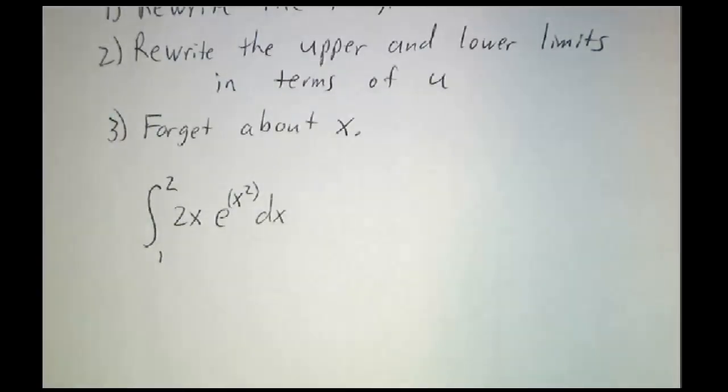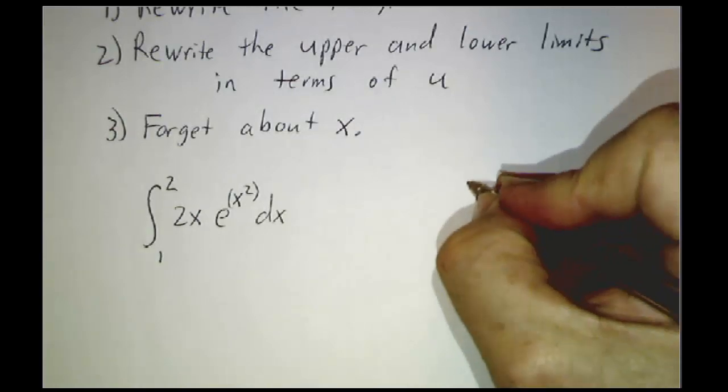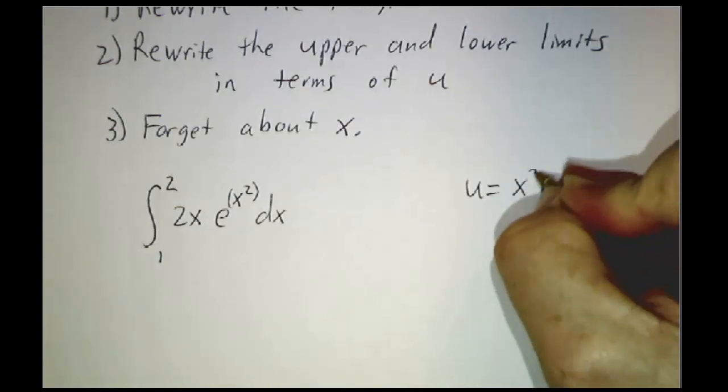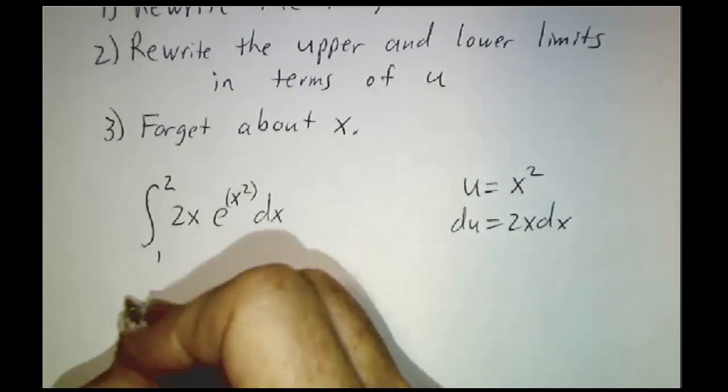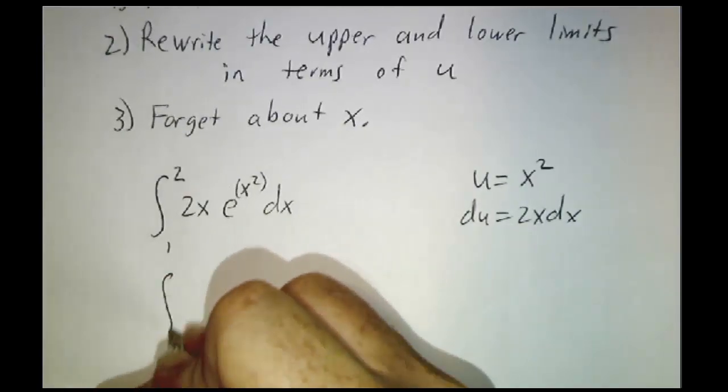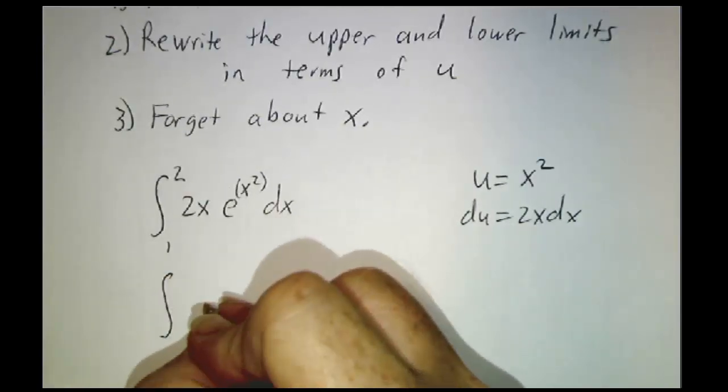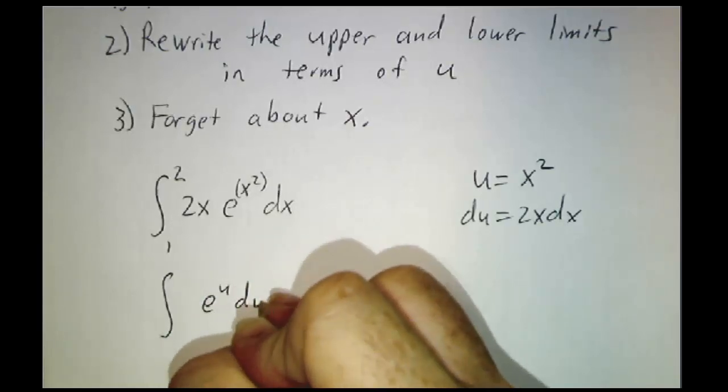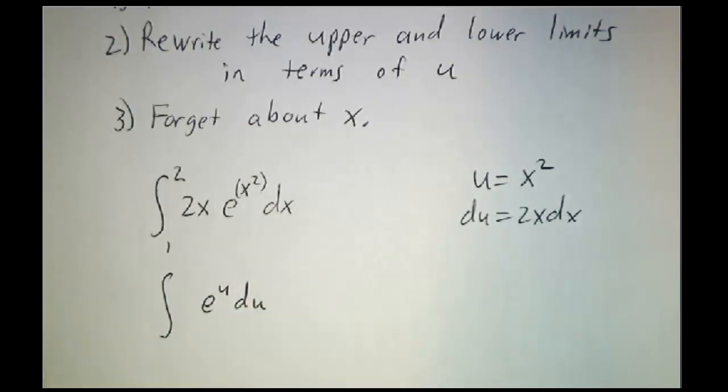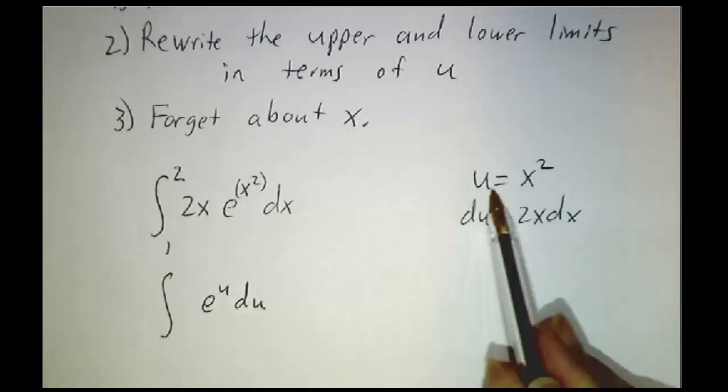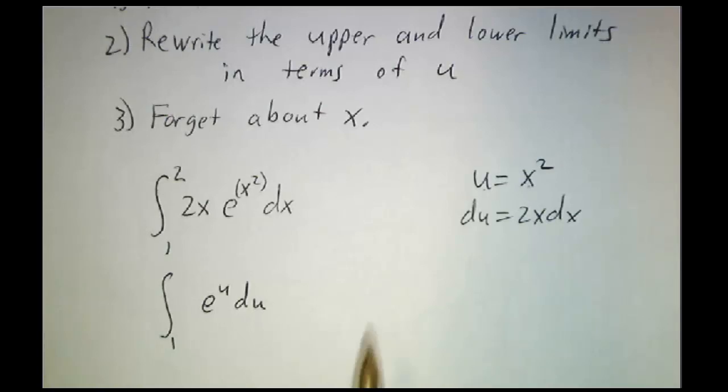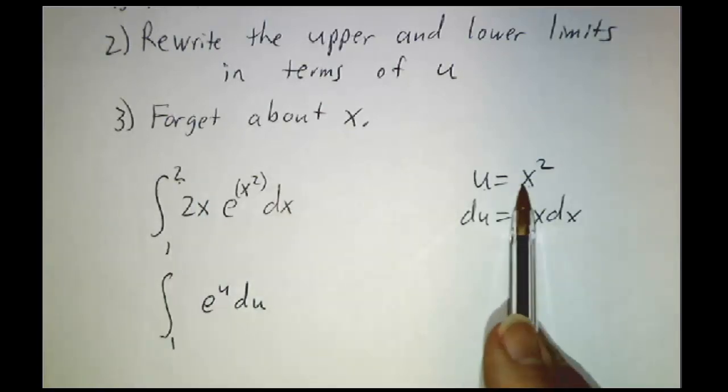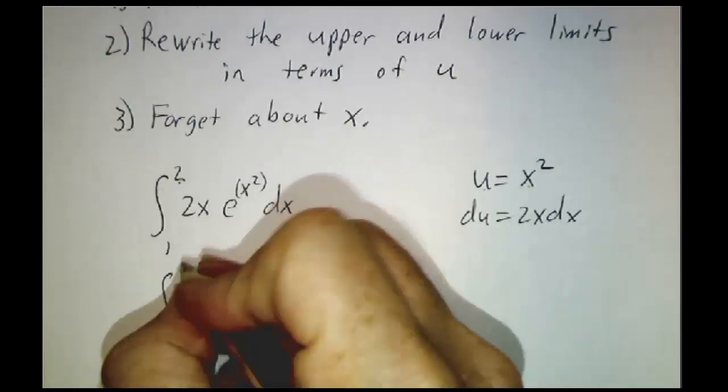So if we do the same problem with the alternate method, we say let's let u be x squared, du is 2x dx. And then we say this is the integral of e to the u du. And now what are the limits of integration? Well, when x equals 1, u is 1 squared, which is 1. When x equals 2, u equals 2 squared, which is 4.